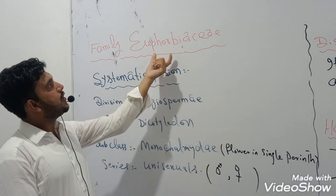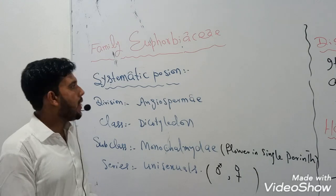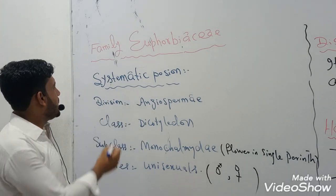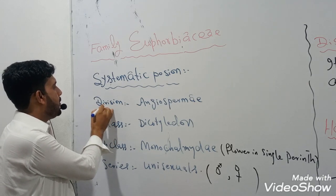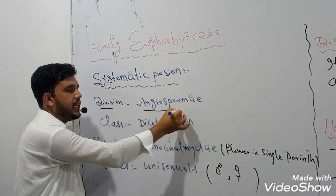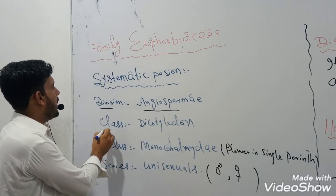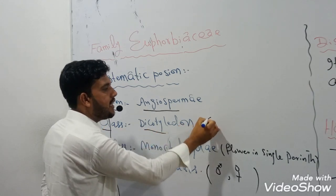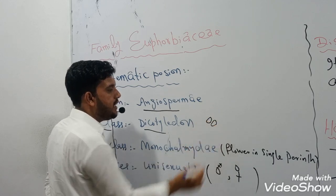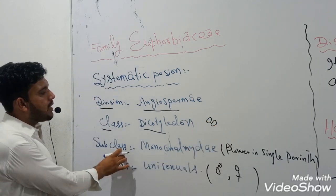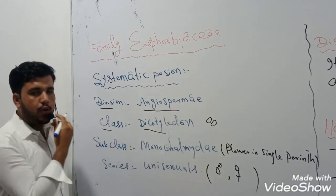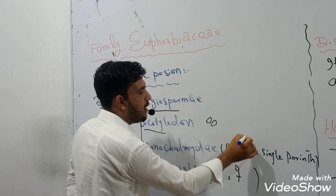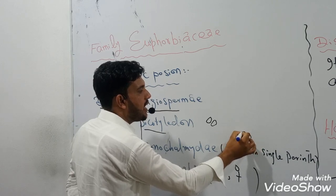Today we will discuss the family Euphorbiaceae. The systematic position of family Euphorbiaceae: the family belongs to the kingdom Angiospermia. They belong to the class Dicotyledons, as their seeds are divided into two cotyledons, like peanut and bean.